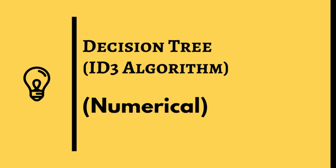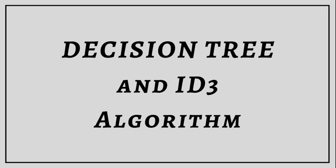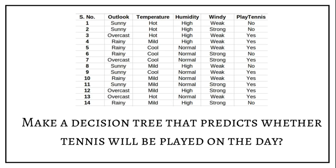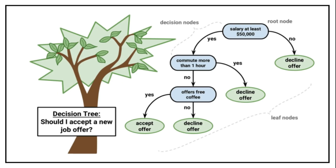Hi, welcome to another video of Code Wrestling. In this video we are going to learn about decision tree and the concept of ID3 algorithm by solving a very simple problem. How does a decision tree look? If I have to form a decision tree of 'should I accept a new job offer,' then it looks like this. Here we can see the logic and how it is making the decision — it is very simple and clear.